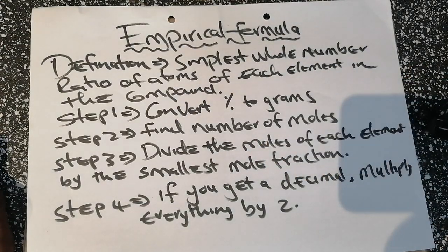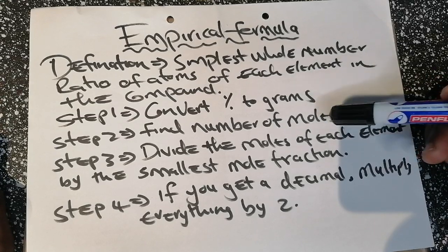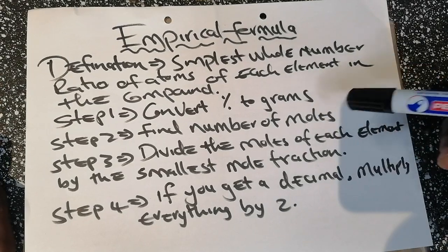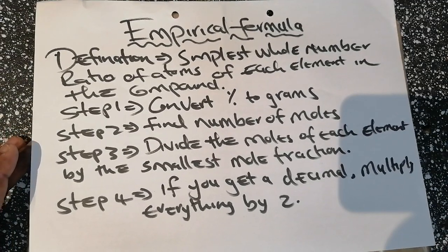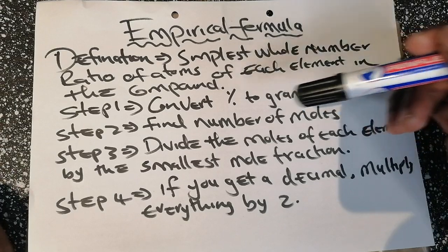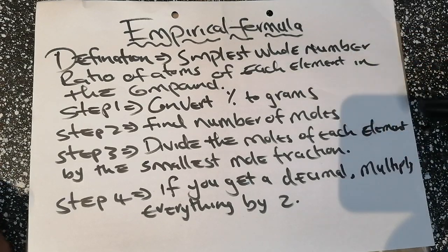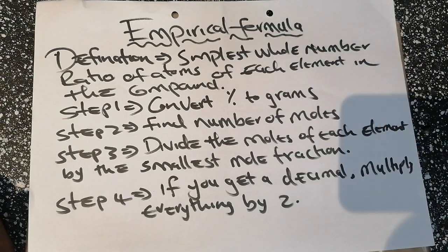Step two: we find the number of moles. Remember, if you have mass in grams you can get the number of moles — it's mass divided by molar mass. Step three: after we get the number of moles for each element, we divide those moles by the lowest number of moles, since different elements will have different numbers of moles.